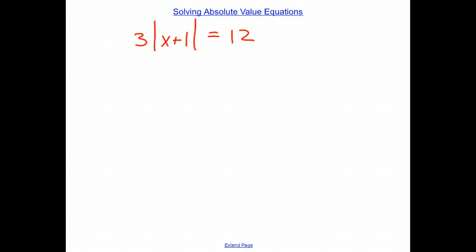So this is actually a pretty easy fix. All we need to do is divide both sides by 3, and we can get the absolute value all by itself. So here we're still dealing with the absolute value of x plus 1. 12 divided by 3 is 4.